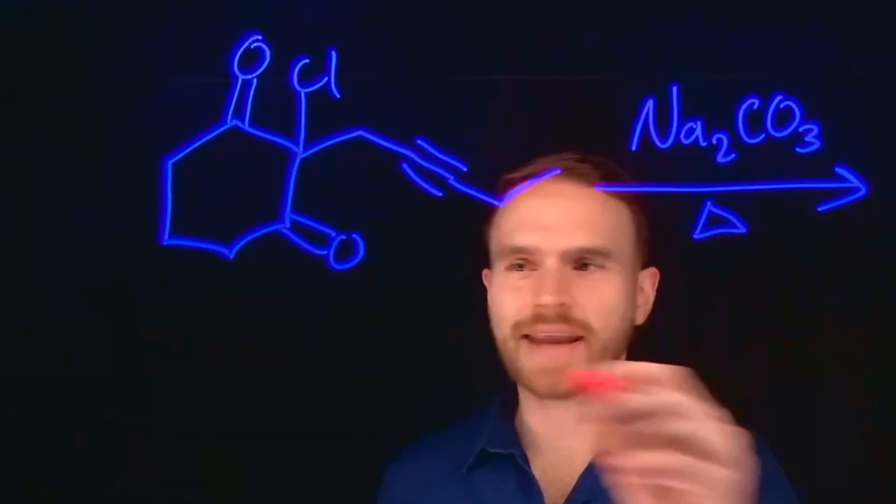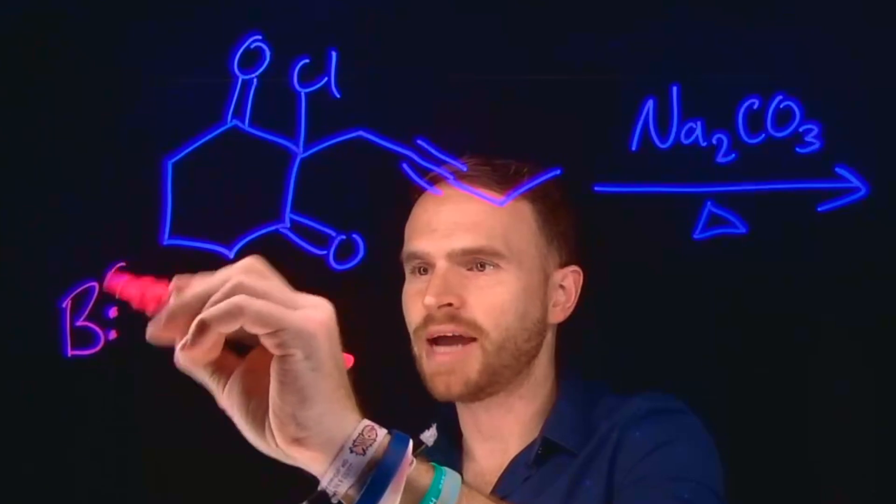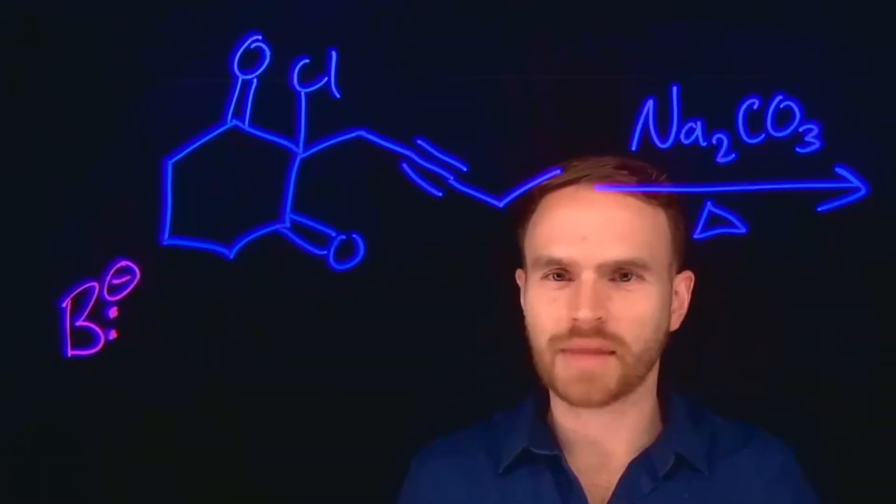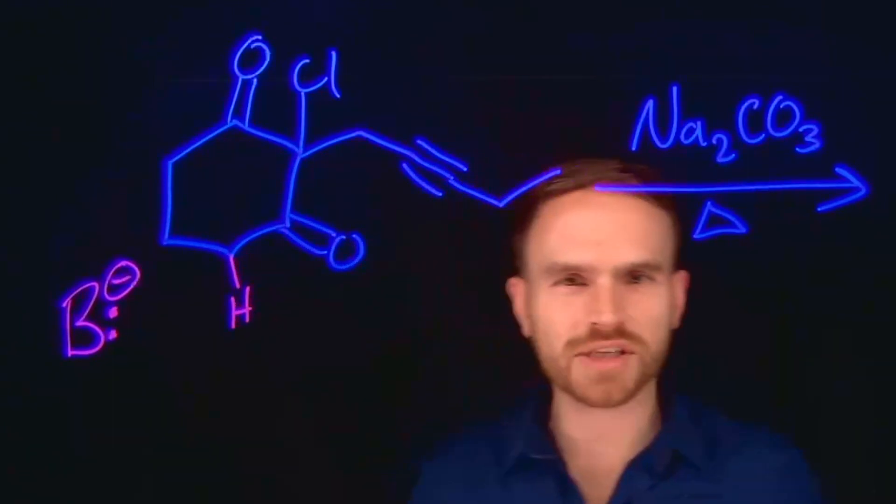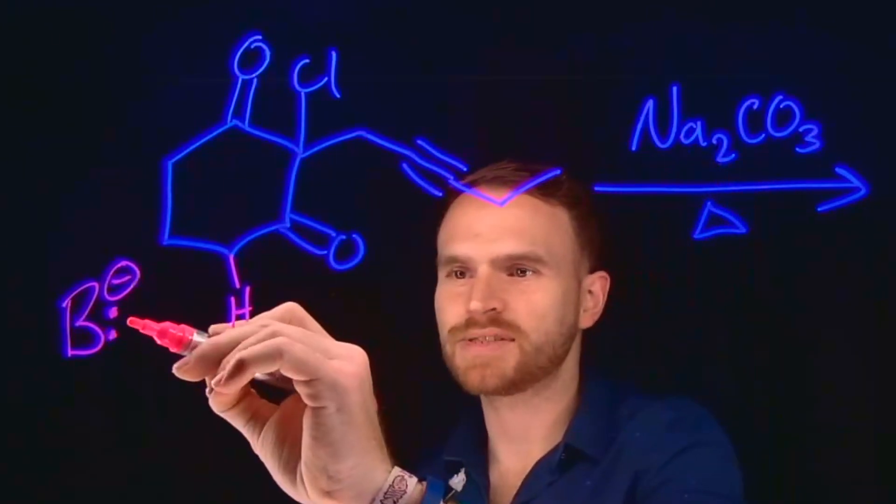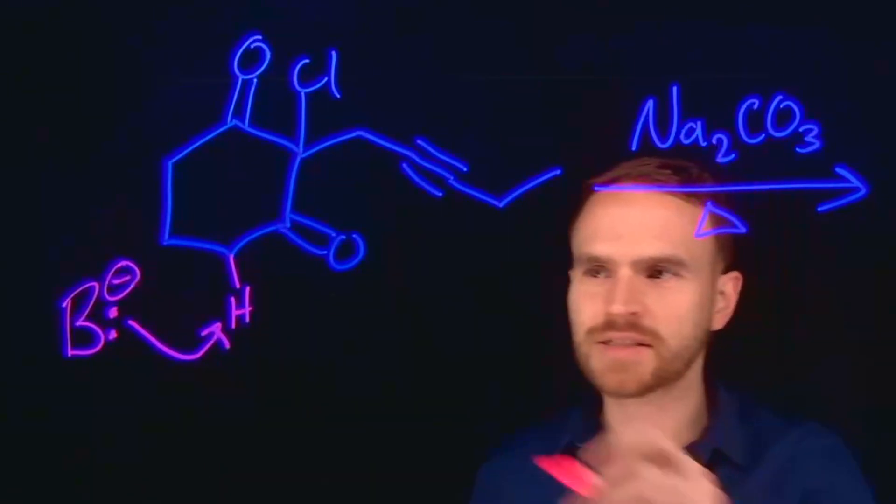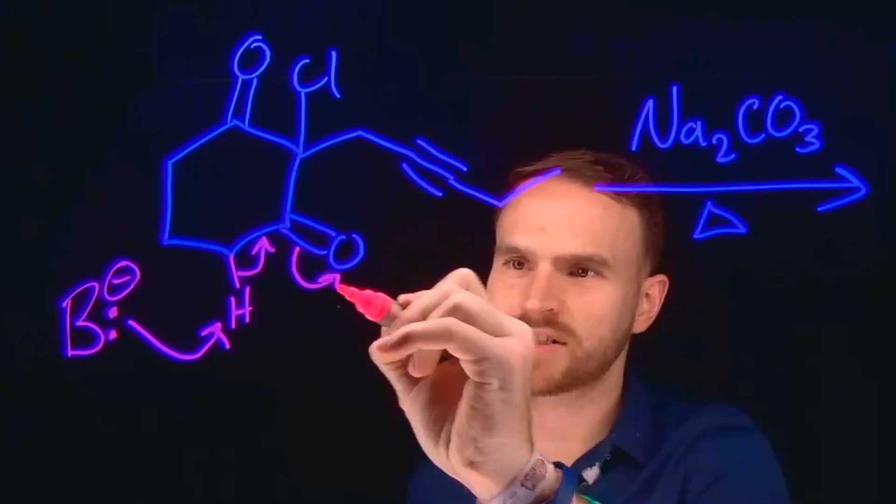Sodium carbonate can act as a base in this reaction. So I'm just going to put B with a minus to indicate that we're using a base, so that way I don't have to draw out the full formula. And from here, we have an alpha carbon position, which is going to be more acidic than most carbon-hydrogen bonds, allowing us to deprotonate at that position. So deprotonation can occur at this alpha carbon-hydrogen. And this is going to bring down these electrons, allowing us to kick up these pi electrons to the oxygen.